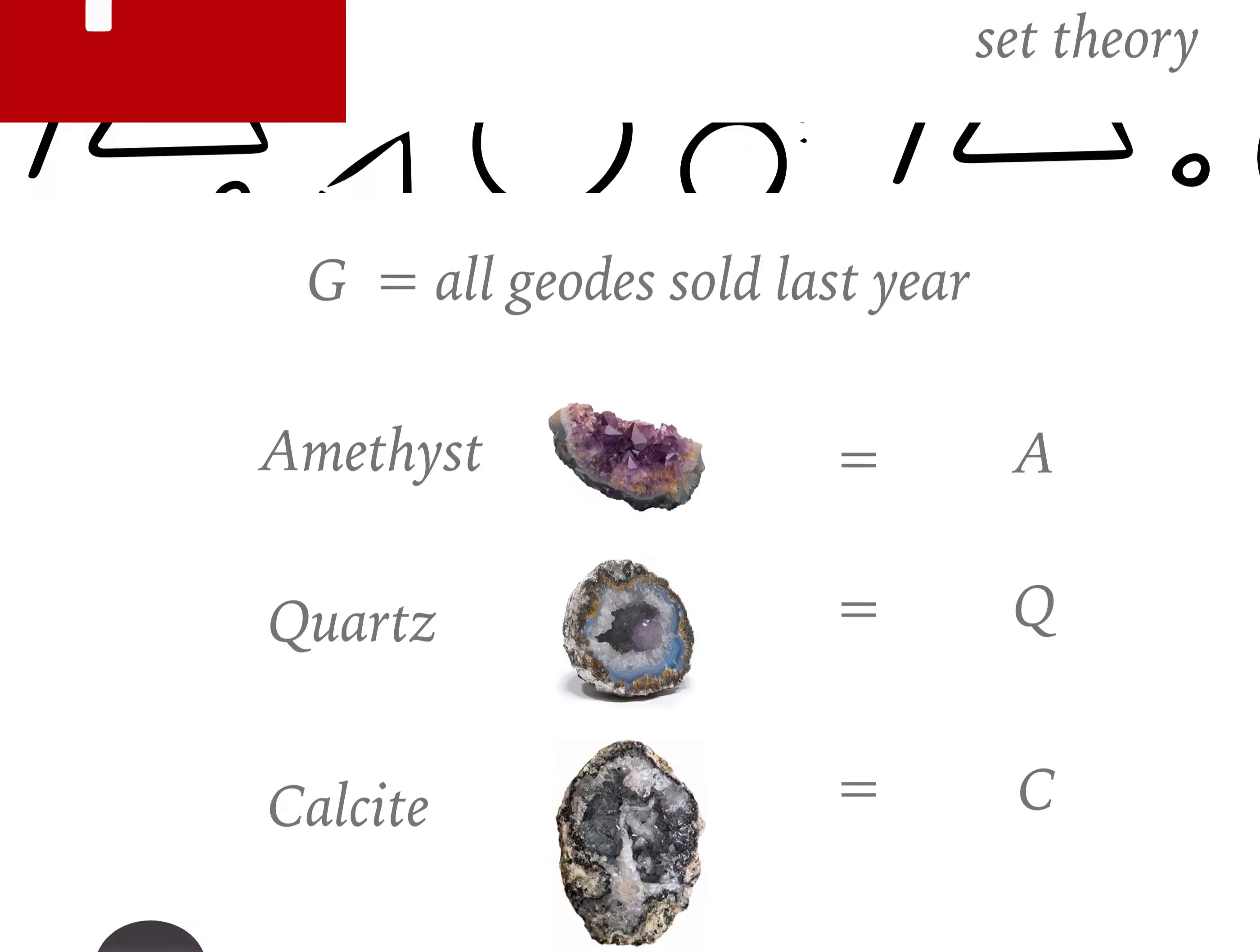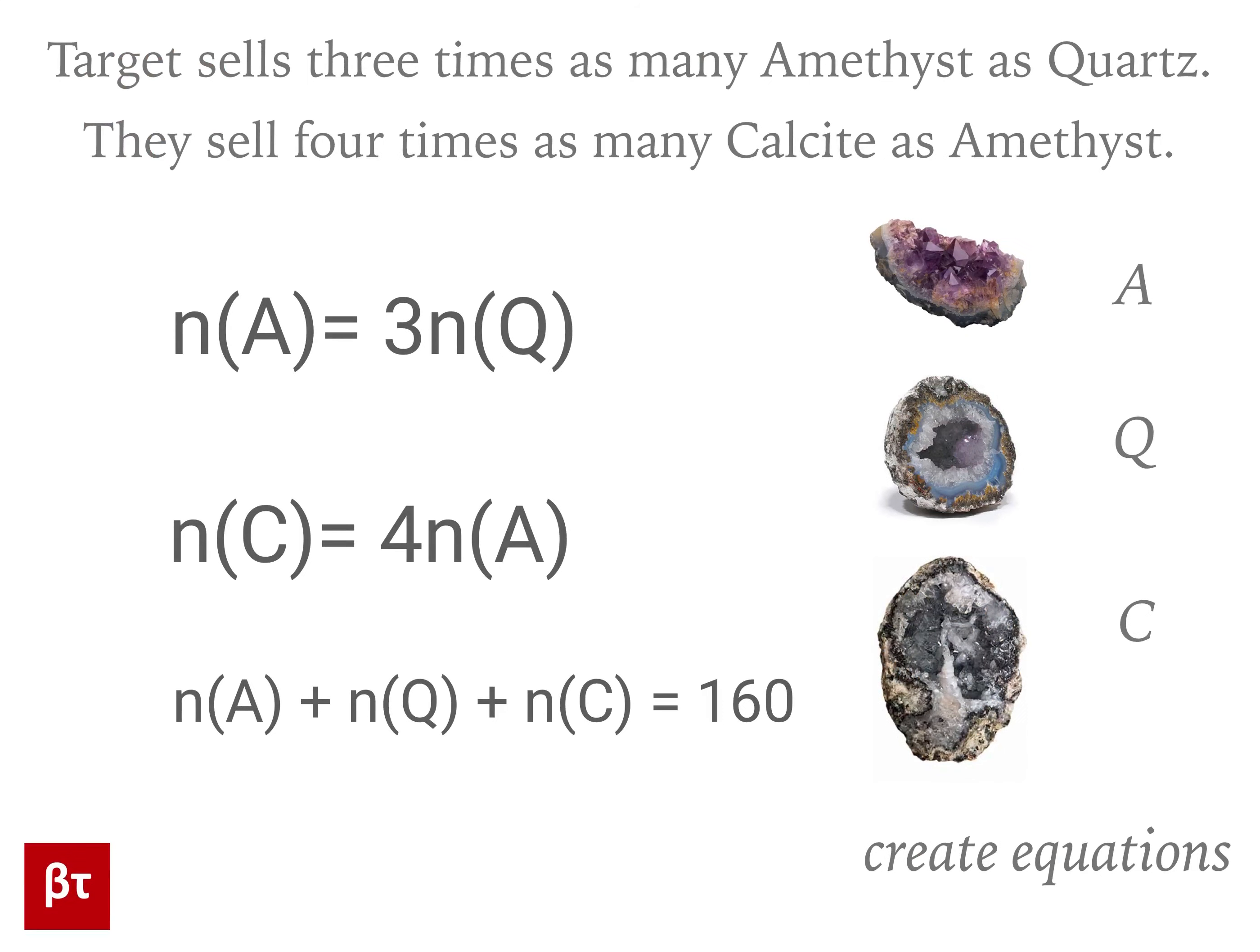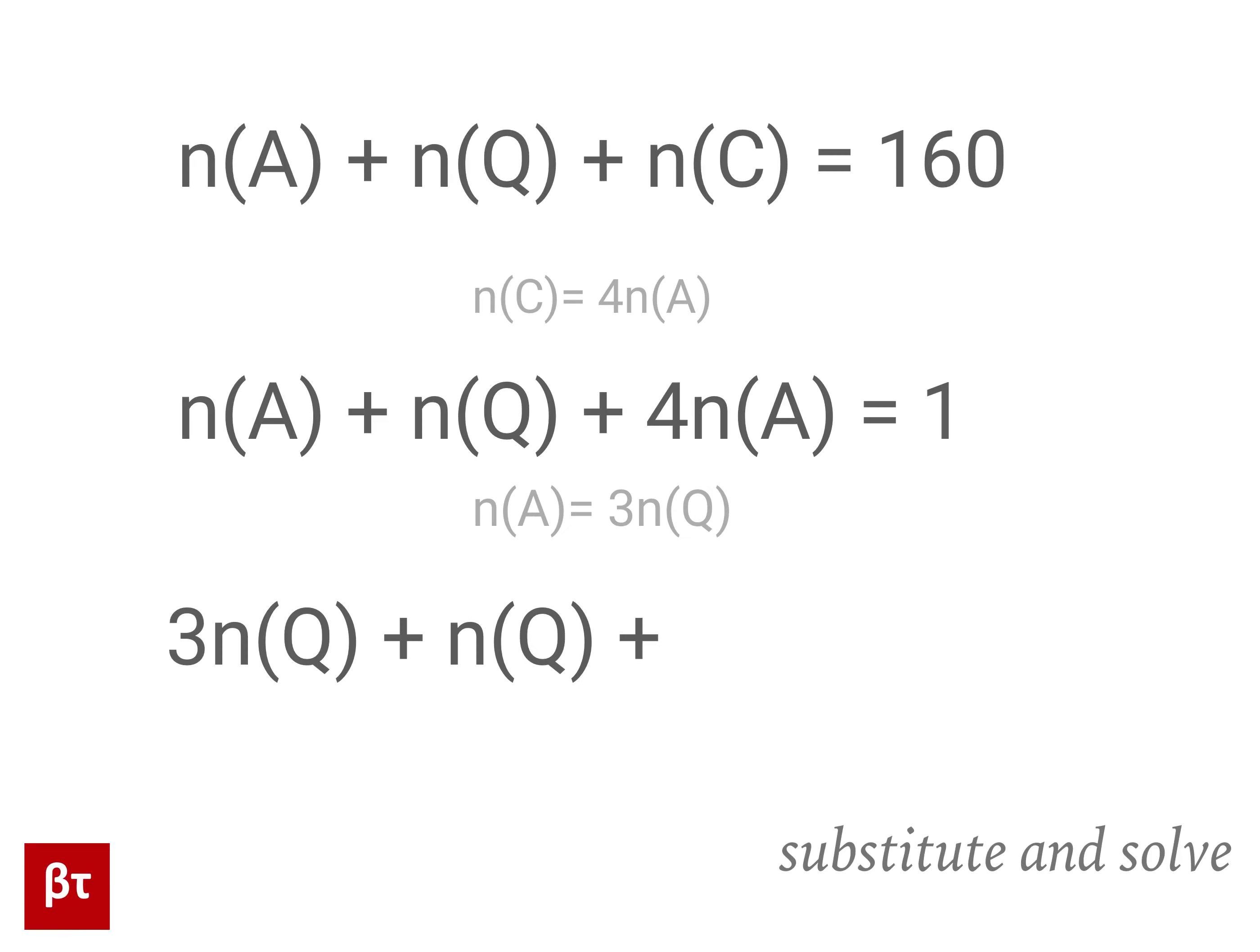To summarize, our first step was to identify the relevant sets in the problem and label them with variables. We then used the information given in the question to create equations in terms of these variables. Our final step was to substitute and solve these equations to get the value of the variable that the question asked for.